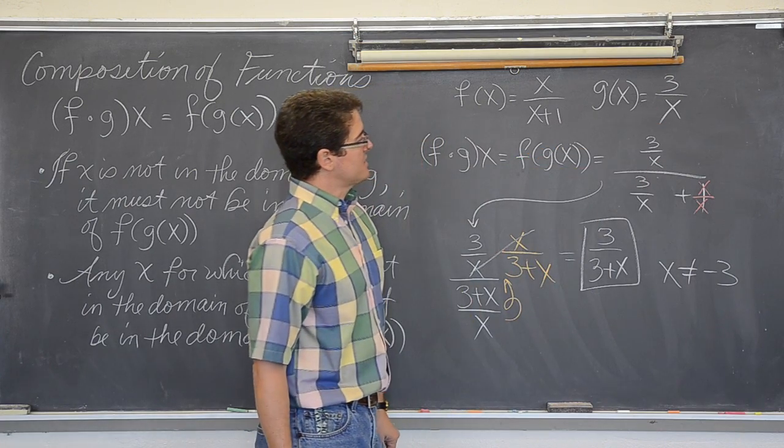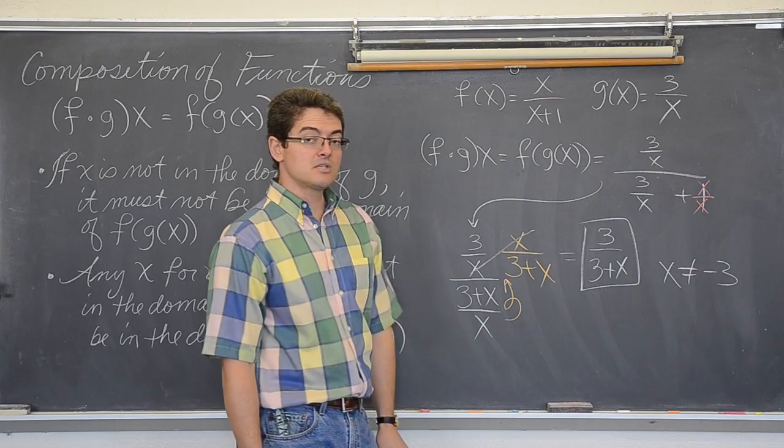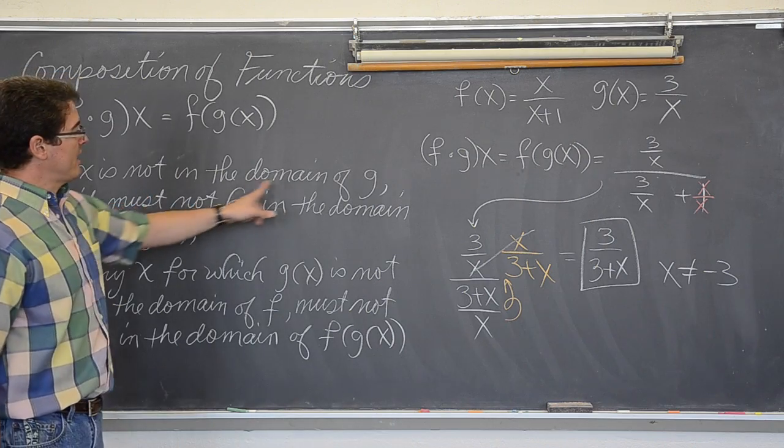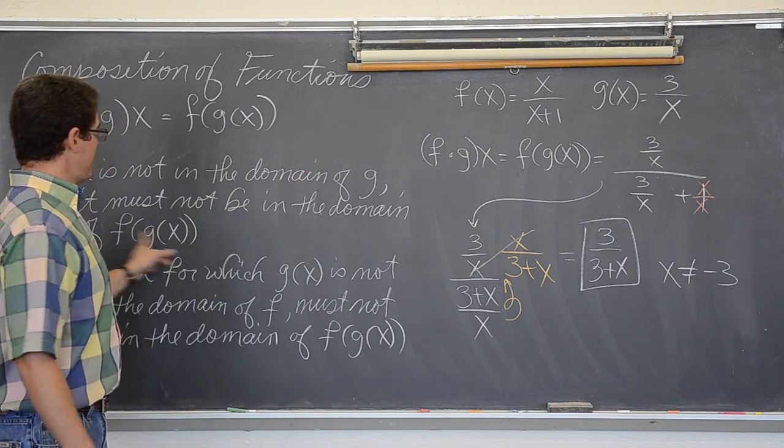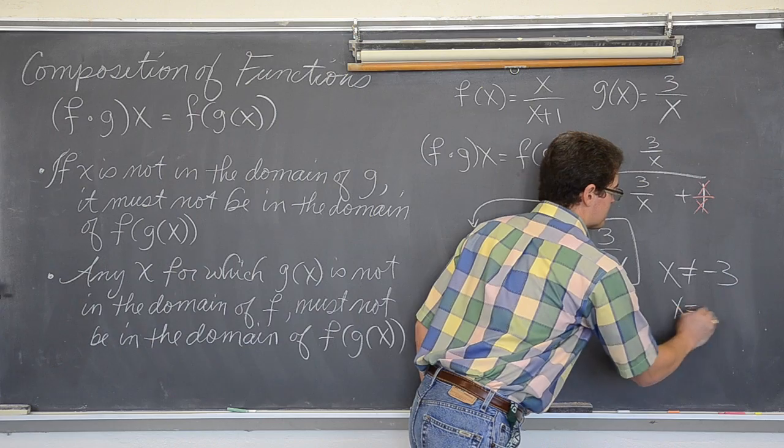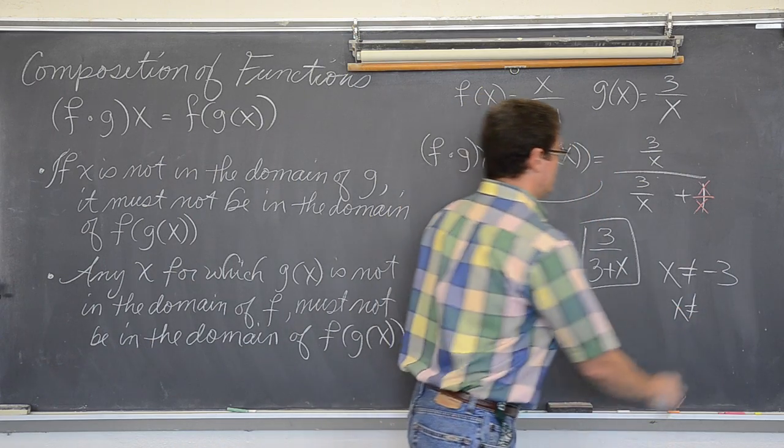So, g of x is undefined at zero. And it says, if x is not in the domain of g, it must not also be in the domain of f of g. So, x cannot also be equal to zero.